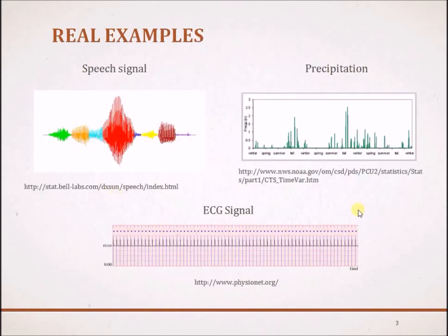So let us look at the graphical representation of some signals. Here we see a speech signal which is a function of time. Here the physical quantity is the acoustic pressure and the information or pattern is the speech itself, that is what we understand, and the independent variable is time.